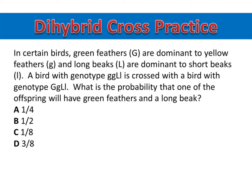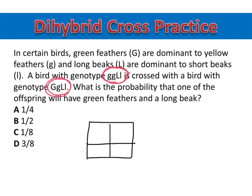What is the probability that one of the offspring will have green feathers and a long beak? So I always want to make sure I understand what genotypes I'm working with. One bird is little g, little g, big L, little l, and that bird is crossed with another bird that has genotype big G, little g, big L, little l. So knowing that, I can make my Punnett squares. Because I'm working with two traits, I'll need two Punnett squares.